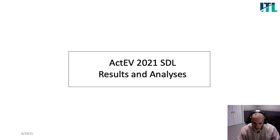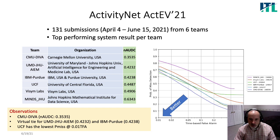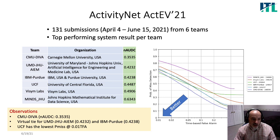On to the results and analysis. Six teams participated in this challenge, submitting 131 submissions in the six-week period beginning April 4th. The table below shows the lowest NAUDC by team for that period. CMU DIVA had the lowest achieved NAUDC at 0.3535, and there was a virtual tie for second between UMD, JHU, AIM, and IBM Purdue at 0.4232 and 0.4238.